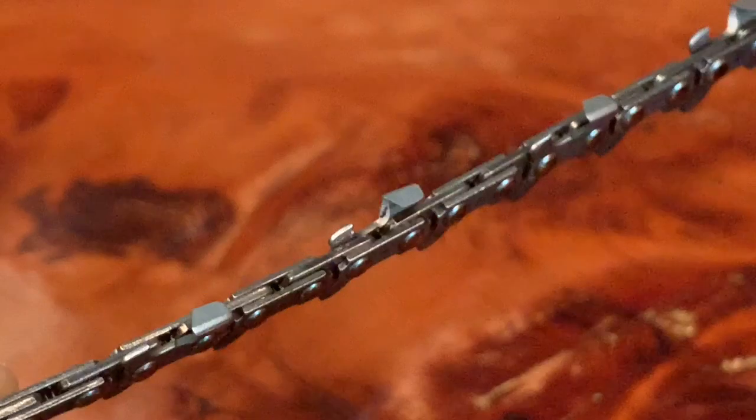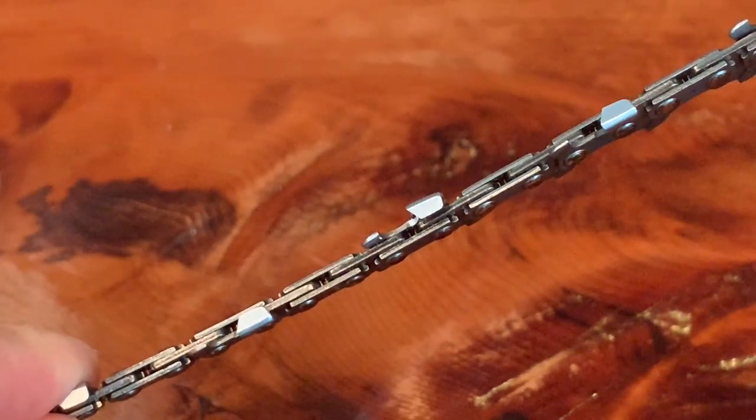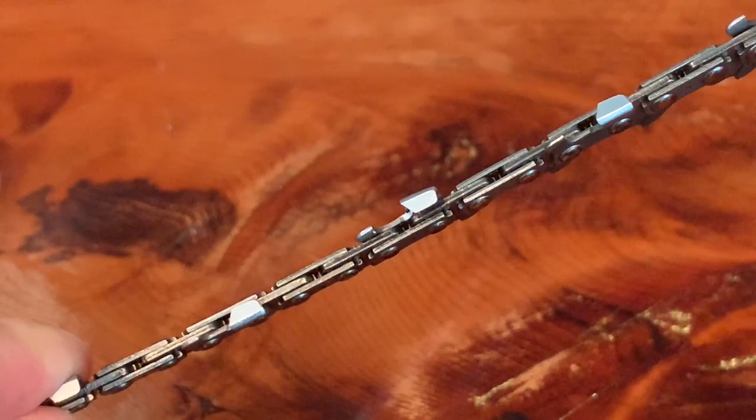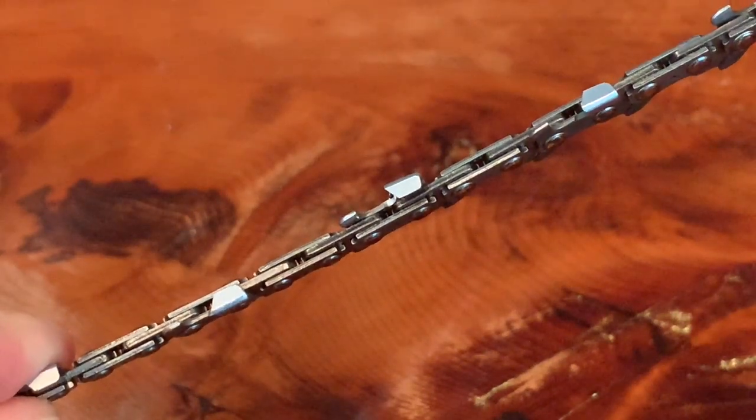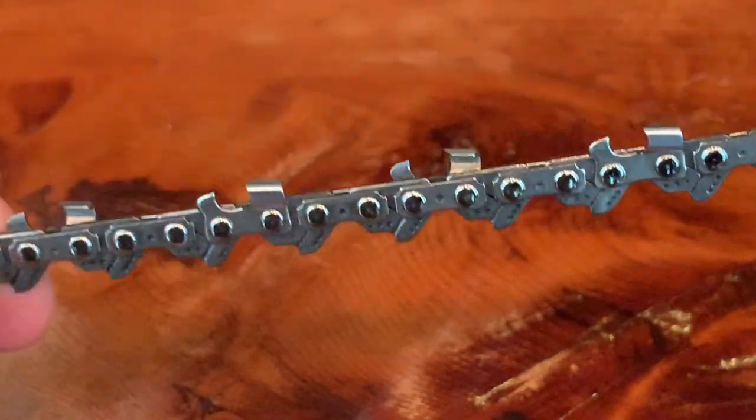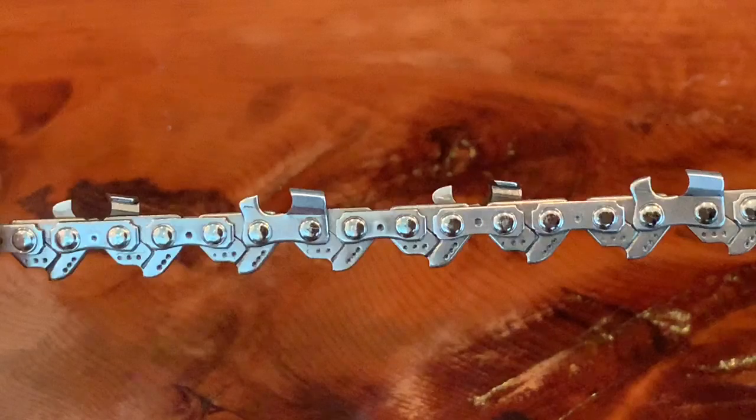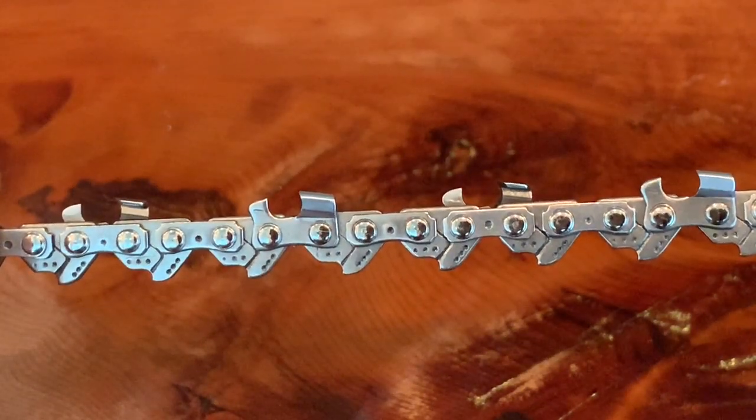When you look down it, it's sharpened at a 30 degree angle. And even though it is a 30 degree angle, this chain also works well for milling because what we found is that the thinner you go with chains, the less important the tooth angle is.